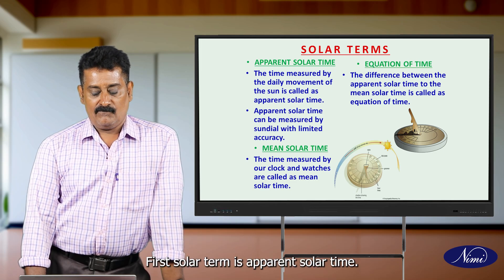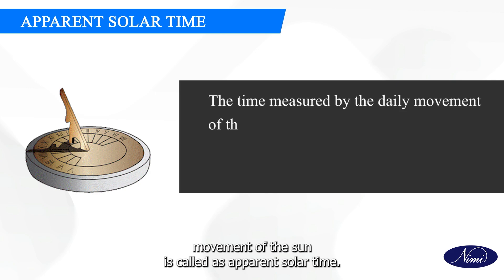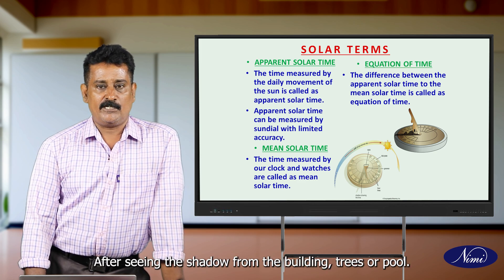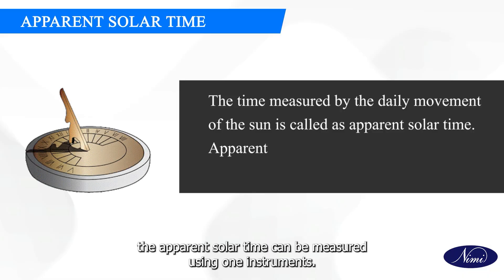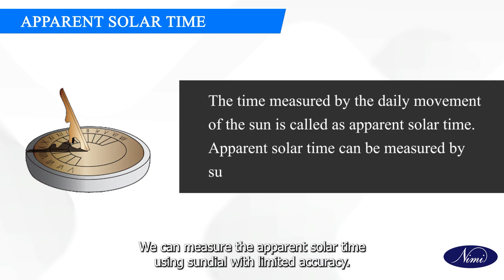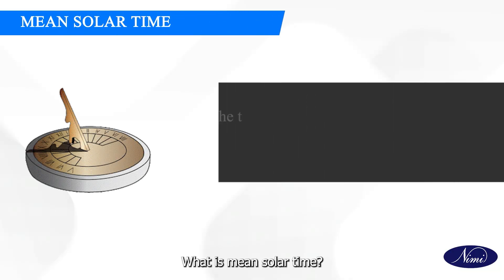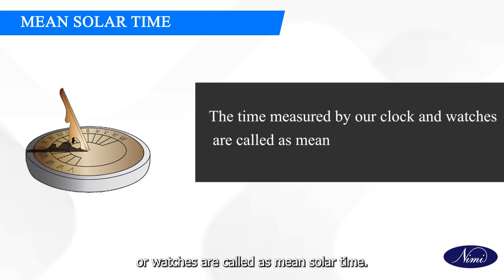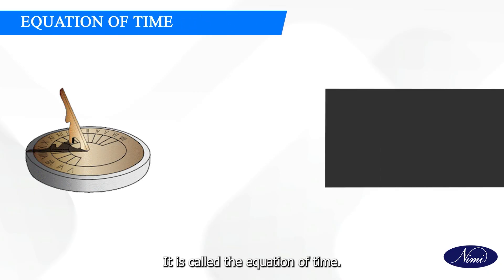Next, we can see some important solar terms. The first solar term is apparent solar time. It is a time measurement by the daily movement of the sun. Our grandparents would tell the time by seeing the shadow from buildings, trees, or poles — using only shadows, they would find out the time. Apparent solar time can be measured using an instrument called a sundial with limited accuracy. Next one is mean solar time. The time measured by hour clocks or watches is called mean solar time. There will be a difference between apparent solar time and mean solar time, and that difference is called the equation of time.